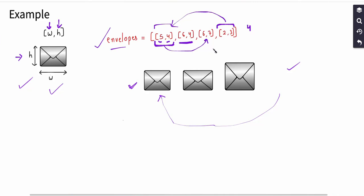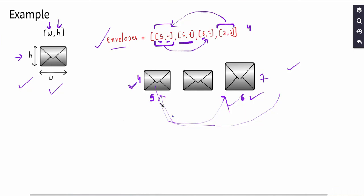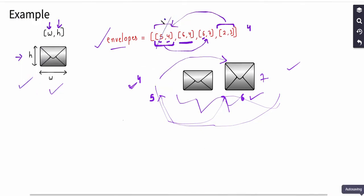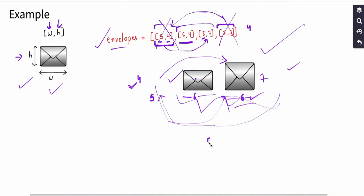The second smallest envelope with dimensions 5 cross 4 can be put into the third envelope. The width of this envelope is 5 and the width of the third is 6, while the height is 4 and the height of the third is 7 — both dimensions of the third are greater, so we can nest them. However, the last two envelopes both have width 6, so we cannot nest one inside the other. We end up with exactly two envelopes at the final configuration.